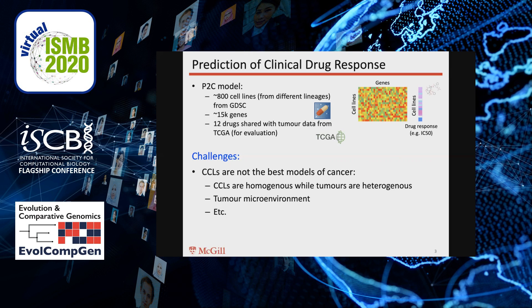The reason is that there are major biological and clinical differences between the training and the test set — in other words, between the cancer cell lines and real tumors. Cancer cell lines are not the best models of cancer since they cannot capture the heterogeneity of cancer cells in a tumor, or the effect of the tumor microenvironment, which is a very important factor, among various other differences.